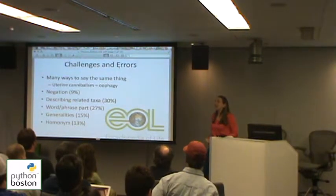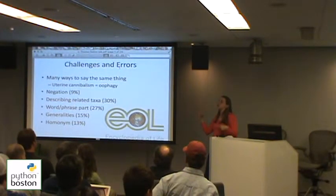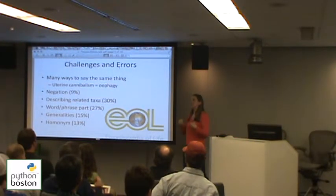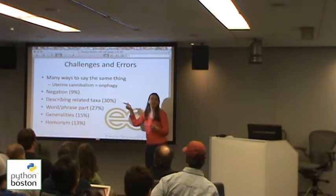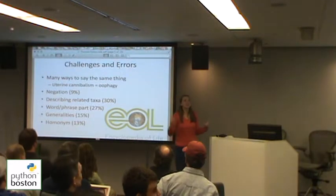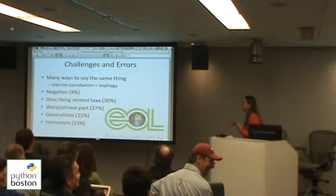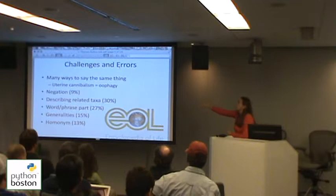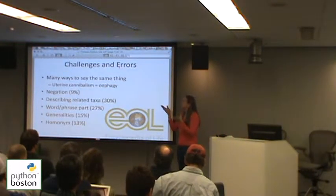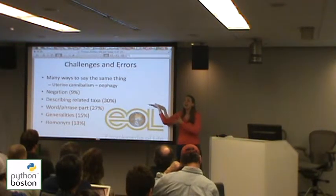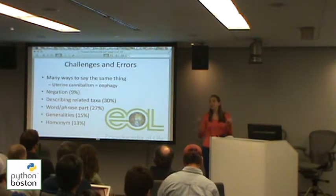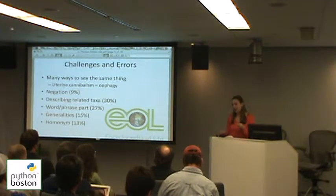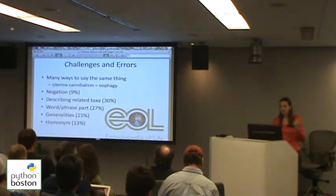When these sharks hatch in the uterus, the older siblings might eat their younger siblings before they're born. This suggests that something like a word net or a biologically focused word net would be very useful.